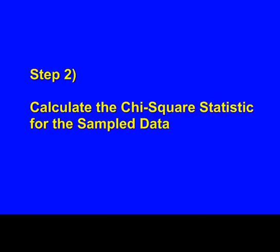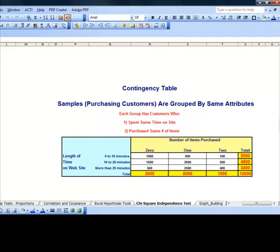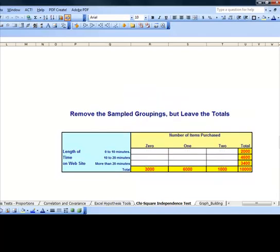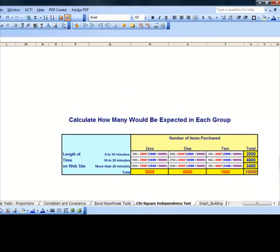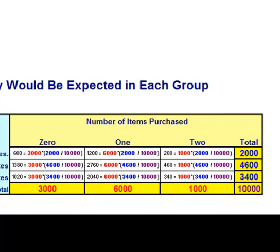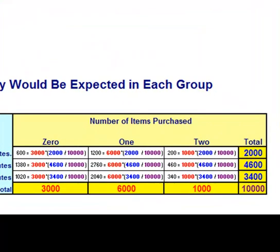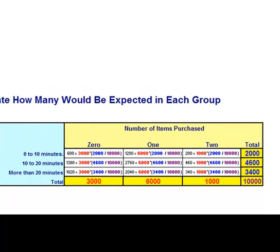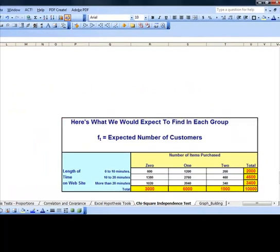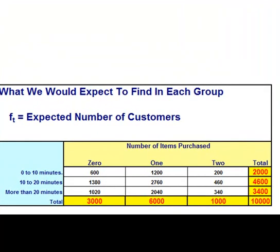In step two, we calculate the chi-square statistic for that sample data. We start with the original contingency table, blank out the observed data while keeping the column and row totals, and fill each of the nine cells with the number of customers we would expect based on those totals. For example, the upper left-hand corner cell would be expected to have 600 customers, because that column has 3,000 total and that row contains two-tenths of the total customers — 2,000 out of 10,000 — so 3,000 multiplied by two-tenths equals 600. We apply that calculation to each of the nine cells.